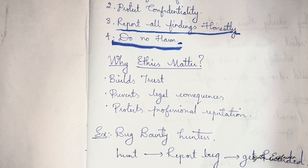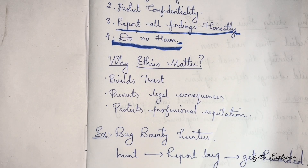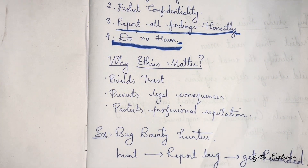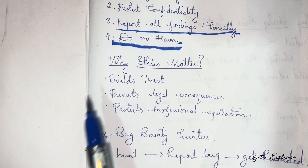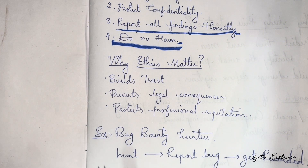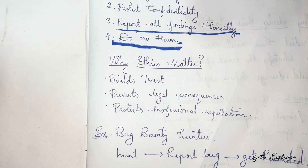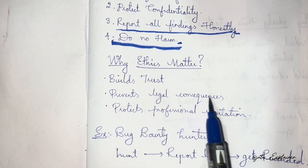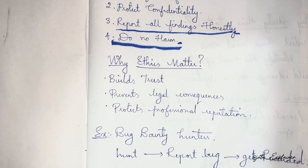Now, why do ethics matter in the field of cybersecurity? If a hacker works ethically, they are someone who can help people; if not, they become an attacker. The first reason ethics matter is to build trust — if I work ethically, you can trust me and grant me access to your system. The second reason is to prevent legal consequences — working ethically means you won't be sued for your actions.